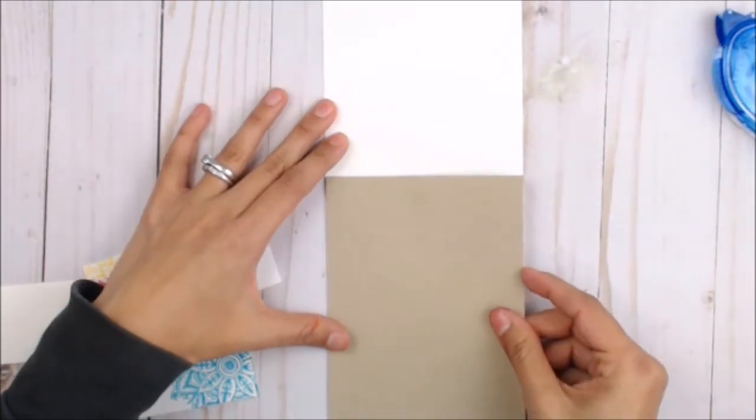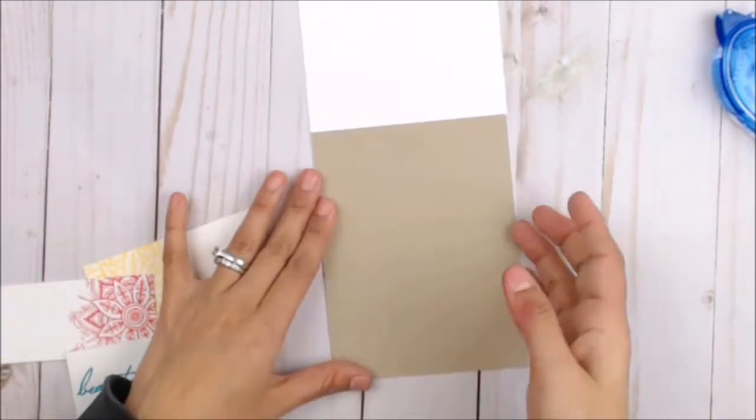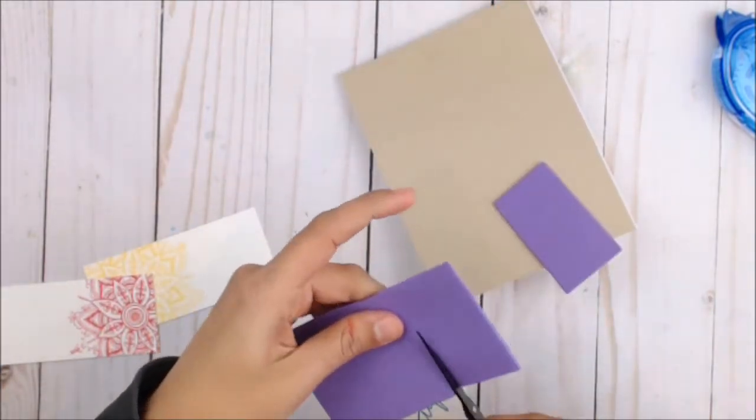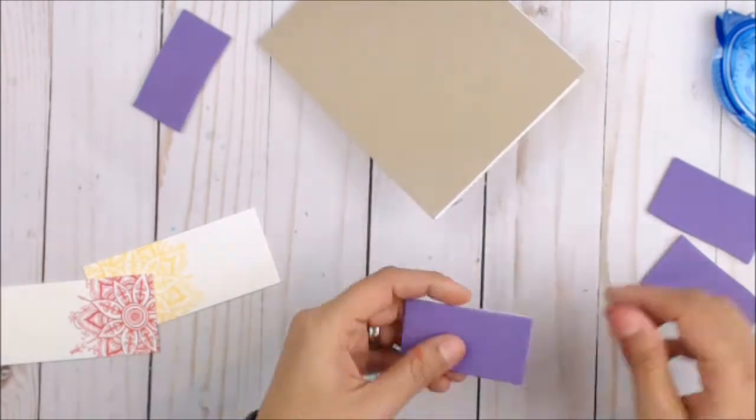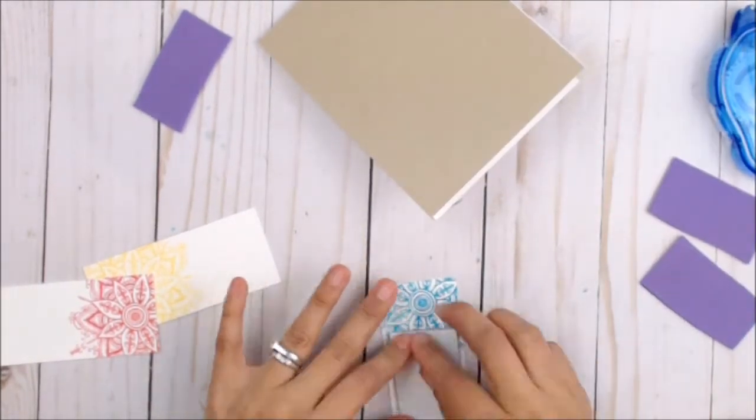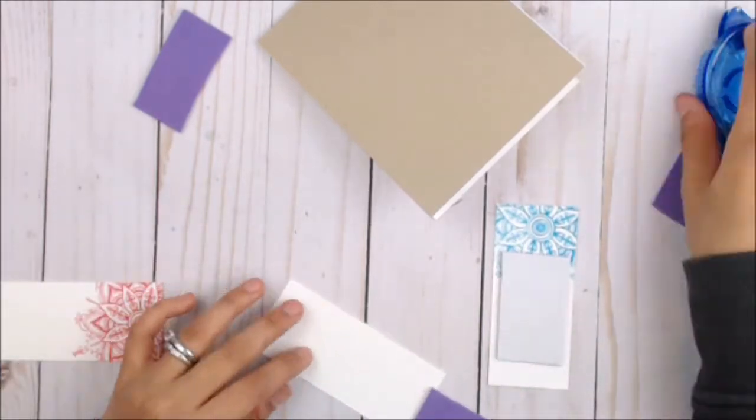I'm going to glue down the Crumb Cake cardstock onto the card base, and then I'm going to put my pieces of stamped cardstock using foam adhesive. Again, I like to use sticky back foam, and I can't seem to find the double-sided stuff, so I stick the non-sticky part to the cardstock and then take the backings out to use as my adhesive.